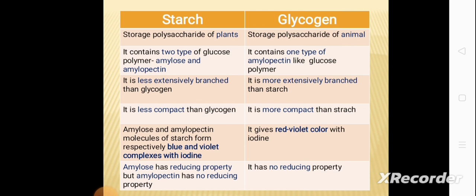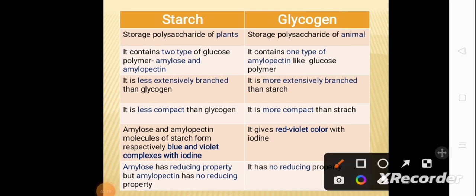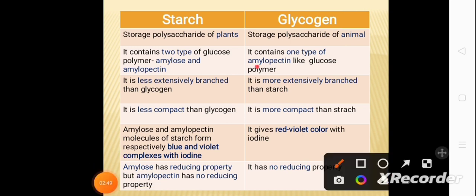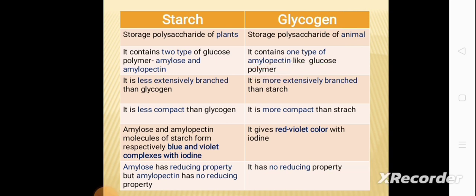Amylose of starch has reducing property, whereas amylopectin has no reducing property. Since glycogen contains only an amylopectin-like glucose polymer, it also has no reducing property.